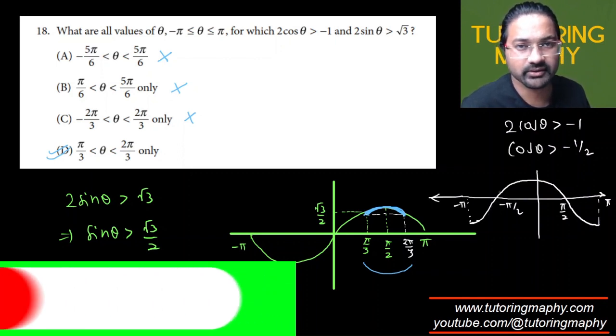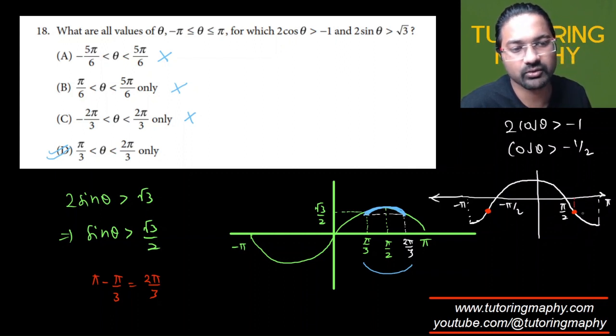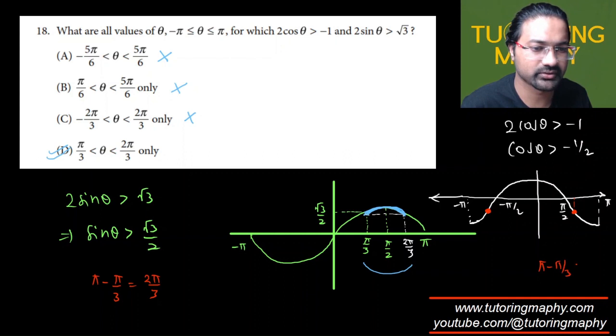Now I want it to be greater than negative 1 over 2. And negative 1 over 2 is somewhere over here. You know, somewhere over here. Somewhere over here. Which will give us a value of negative 1 over 2 at the second quadrant should be pi minus pi over 3. Right? Should be pi minus pi over 3, which is 2 pi over 3. So this should be 2 pi over 3. And this should likewise be negative 2 pi over 3.